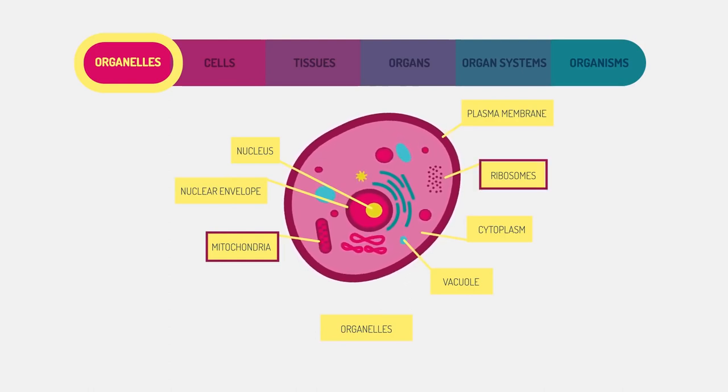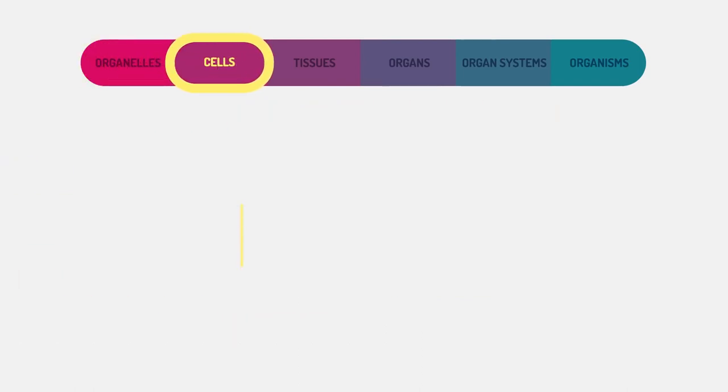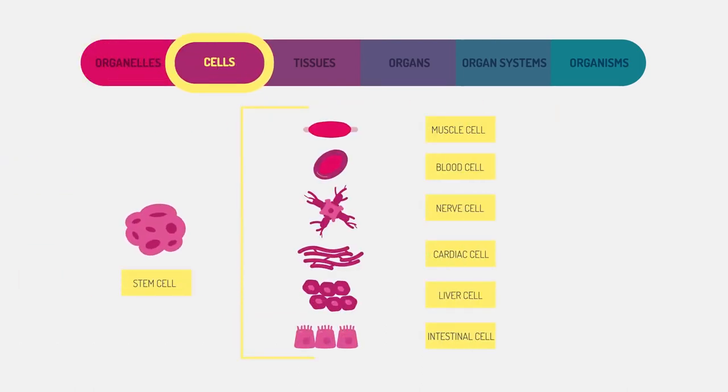Cells themselves are the basic structure that make up living organisms. In multicellular organisms they are differentiated to carry out different roles. Here are a few specialized human cells.